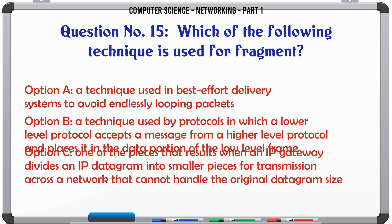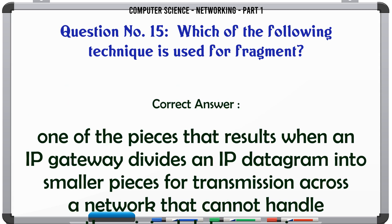Which of the following technique is used for fragment? A. A technique used in best-effort delivery systems to avoid endlessly looping packets. B. A technique used by protocols in which a lower-level protocol accepts a message from a higher-level protocol and places it in the data portion of the low-level frame. C. One of the pieces that results when an IP gateway divides an IP datagram into smaller pieces for transmission across a network that cannot handle the original datagram size. D. All of the above. The correct answer is: One of the pieces that results when an IP gateway divides an IP datagram into smaller pieces for transmission across a network that cannot handle the original datagram size.